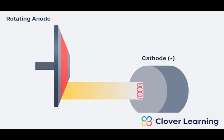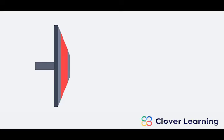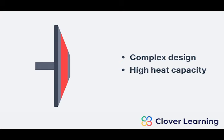So what can we say about rotating anodes? We can say that they are a little bit more complicated. However, they have a very high heat capacity with that large focal track. And because of that, they can be used for high exposures.